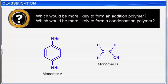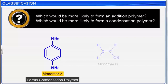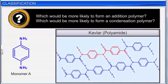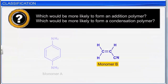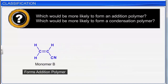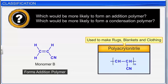Consider two monomer structures: Monomer A would form a condensation polymer — it is a bifunctional monomer and is one of the two components of Kevlar, a polyamide. Monomer B has a carbon-carbon double bond and forms an addition polymer. Monomer B is a monomer of polyacrylonitrile, which is used to make rugs, blankets, and clothing.